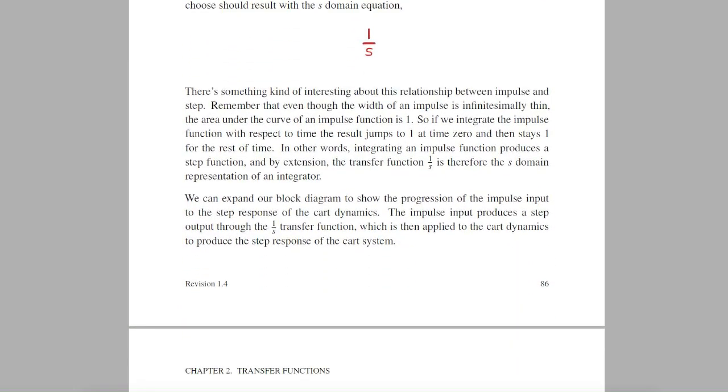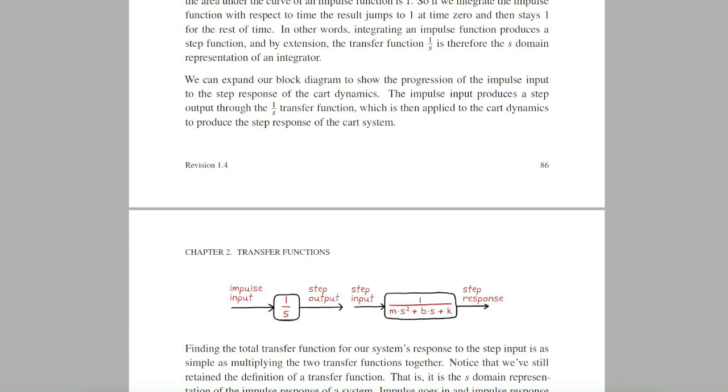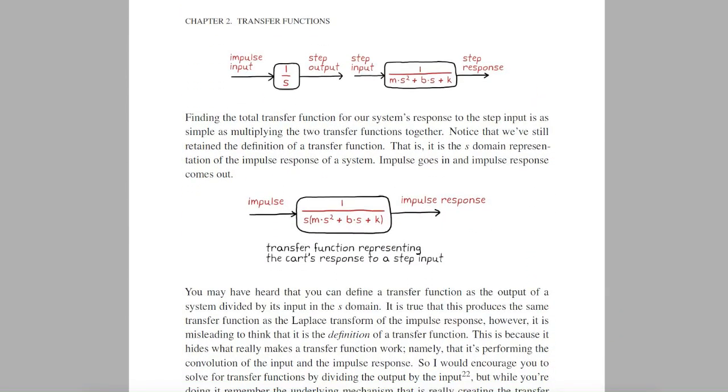We can now think about applying a step function as a two-step process. First, an impulse produces a step through 1 over S, and the step produces a step response through our cart's transfer function. The total transfer function for the system with a step input is just the multiplication of 1 over S and the cart's transfer function. Notice that we've retained the definition of a transfer function. Impulse goes in, and impulse response comes out.